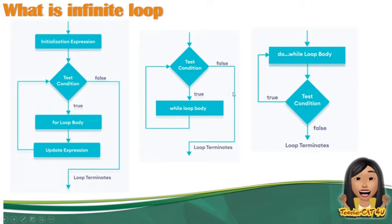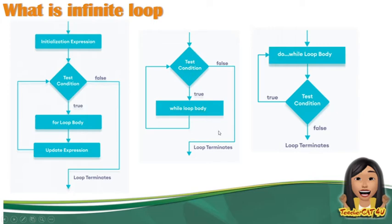Kung papansin ninyo sa kanilang tatlo — dito kay while, test condition, pag nag-true, gagawin lang niya ulit. Kapag kay do-while naman, hindi siya kagaya ni for at saka ni while na condition muna. Dito kay do, ginawa niya muna yung block of code o yung body bago tinest yung condition. After matest yung condition, uulitin lang niya yung block of code. Unlike dito sa dalawa, na kailangan dumaan ka muna sa condition pag nag-true, saka gagawin yung block of code.